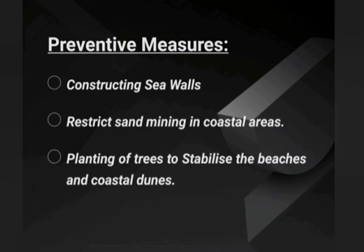Next, the preventive measures to control coastal erosion. Natural disasters cannot be prevented or stopped, but we have to alert ourselves. The measures include: constructing sea walls, using rubble, restricting sand mining in coastal areas, and planting trees on beaches, coastal dunes. These are the preventive measures to control coastal erosion.